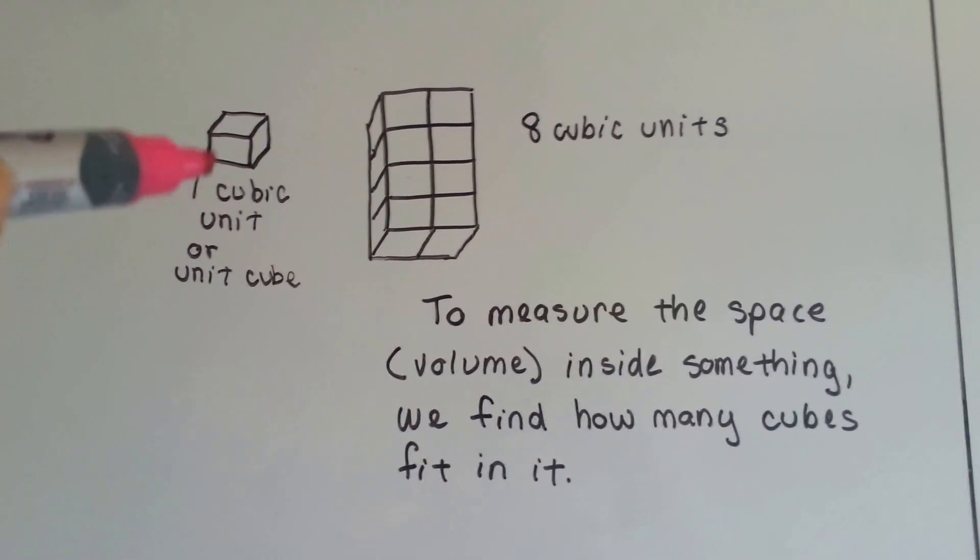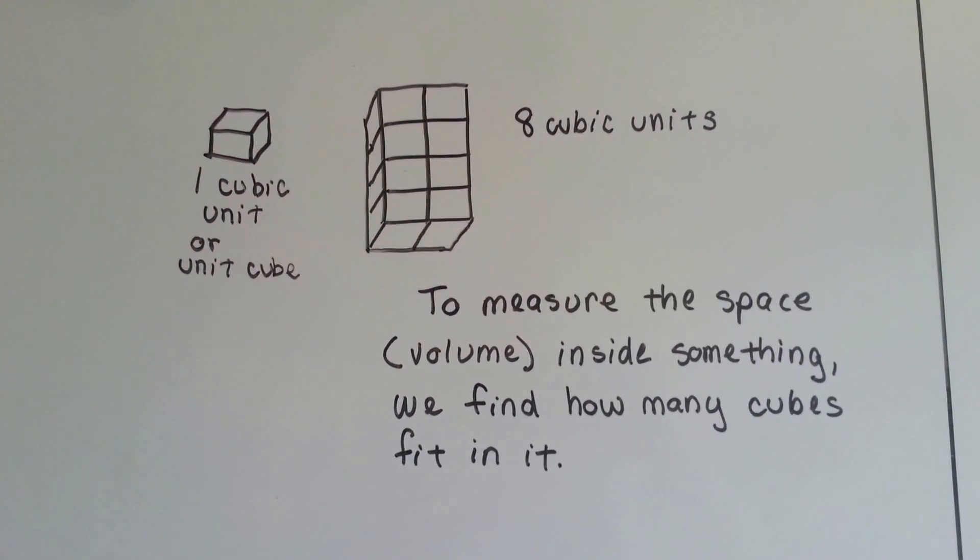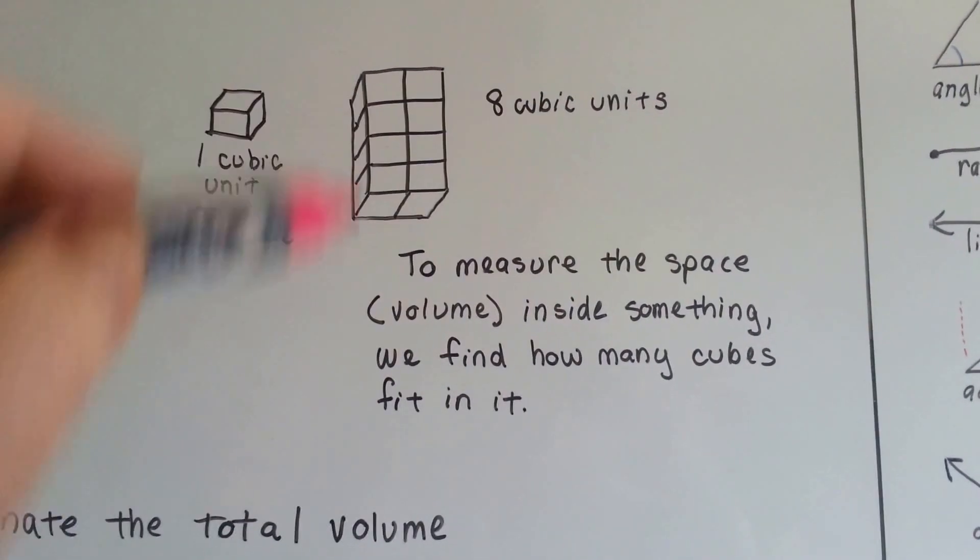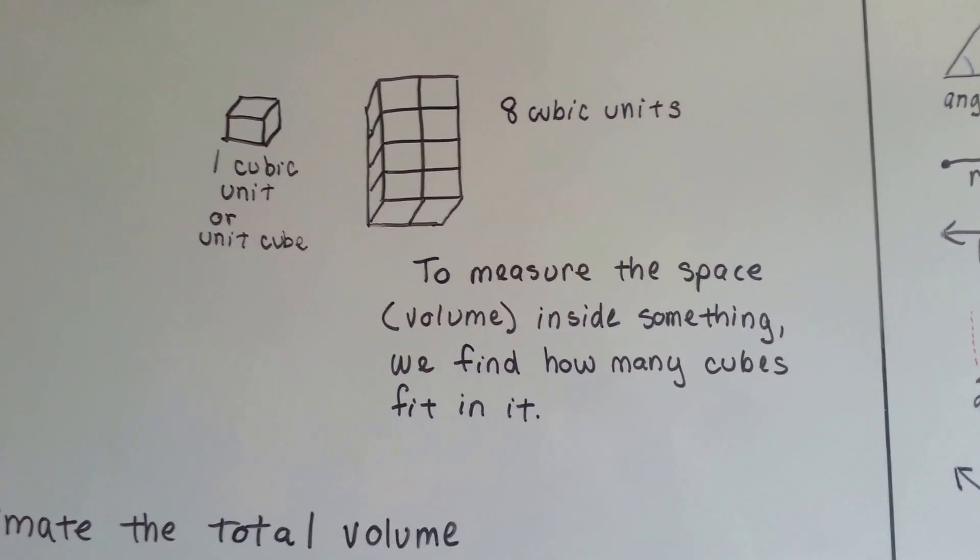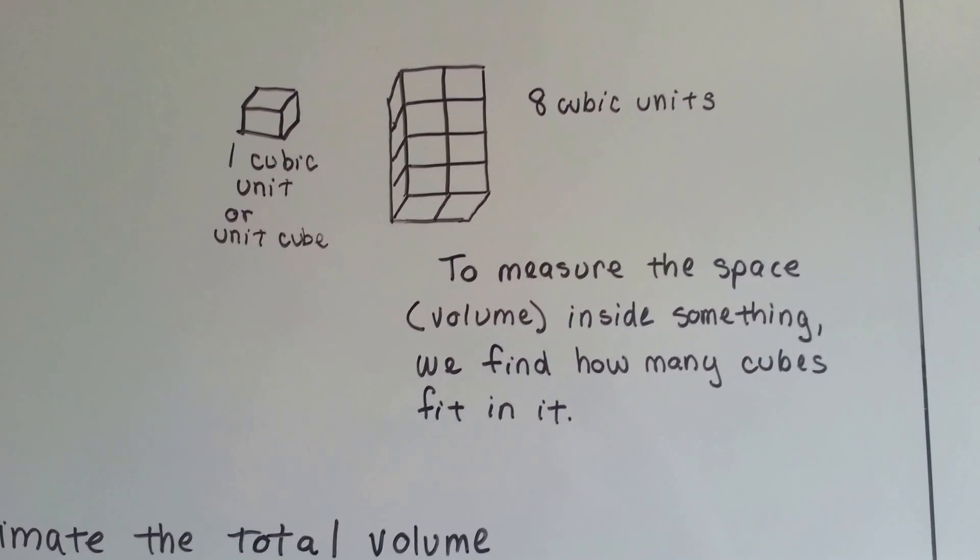For all of those measures, for all of those dimensions, it has the same units. If you had eight of them, you'd have eight cubic units. So we measure the space, the volume inside of something, and we find how many cubes fit in it.